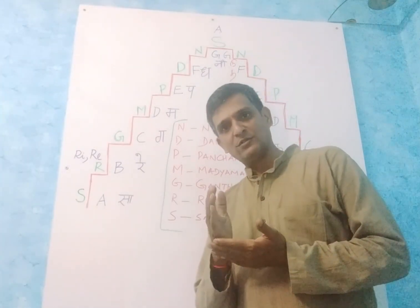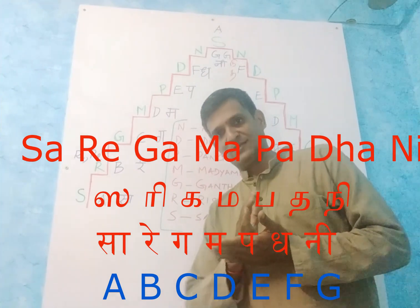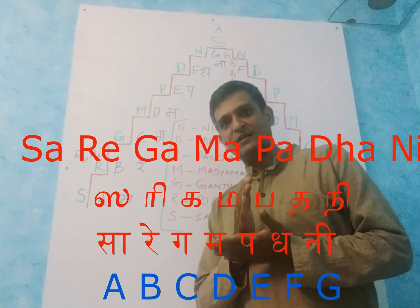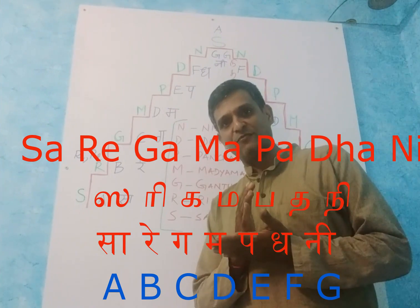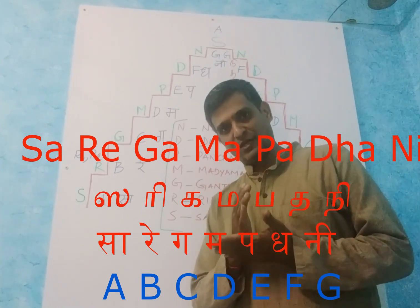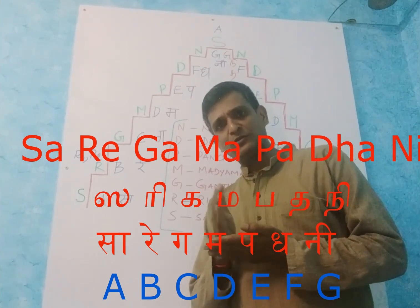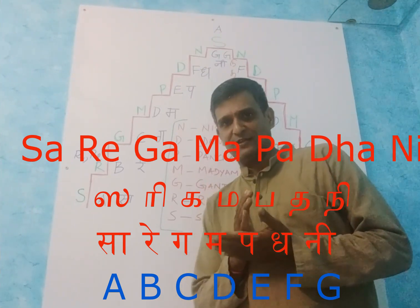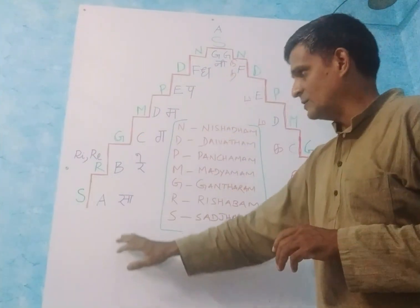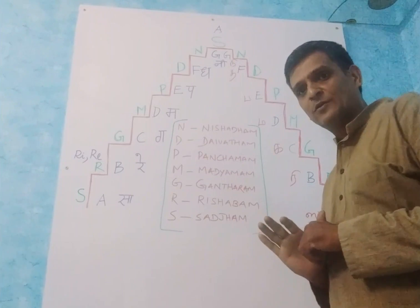Many of you already know that Sa Re Ga Ma Pa Da Ni are the seven notes of music. It is in Indian music. But the pronunciation differs in Indian music itself, compared to Carnatic music and Hindustani music. For that, I have drawn one simple diagram chart to explain you.